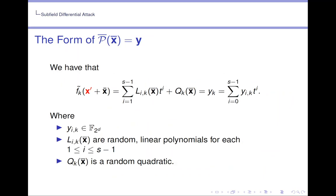So we can write this again as F_k tilde evaluated at x' plus x̄ is equal to some sum of some random linear functions over F_{2^d}, multiplied by T for all the powers of T from 1 to s minus 1, plus a single quadratic equation which is not multiplied by T. And we set this equal to y_k, which we can also decompose into the powers of T.